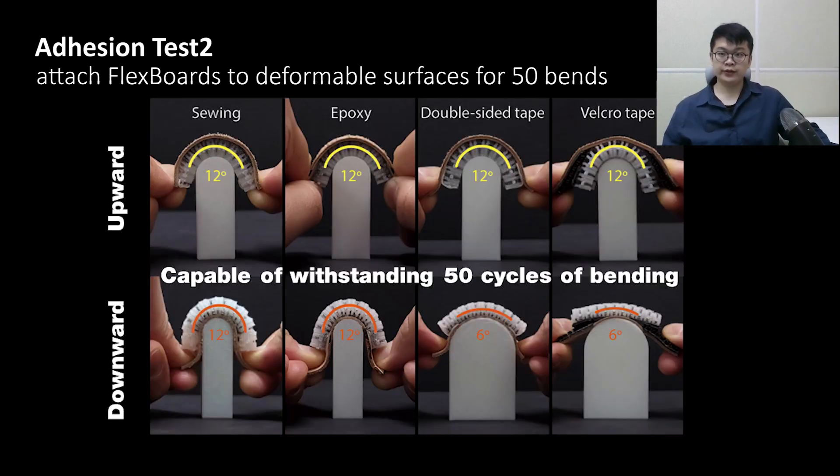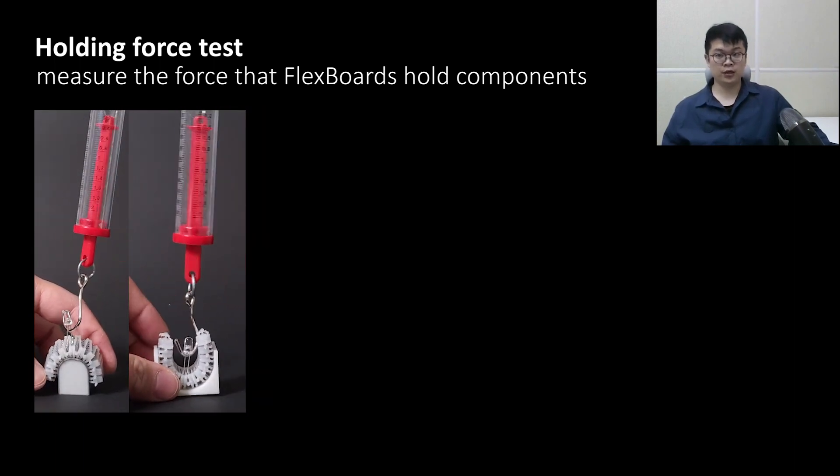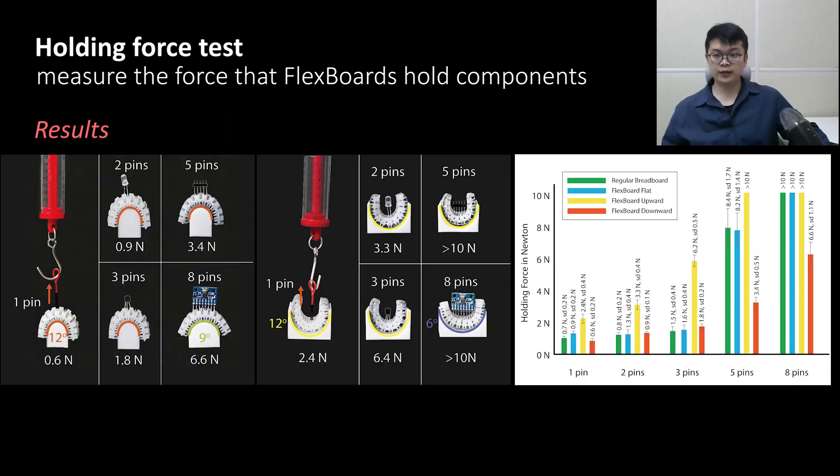Moreover, according to the test, the FlexBoard can withstand more than 50 bends when adhering to a flexible surface. Finally, we tested the holding force of the FlexBoard when electronic components are unplugged. Even when bent, the FlexBoard has a similar holding force to that of a conventional breadboard.